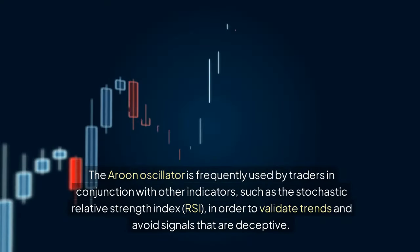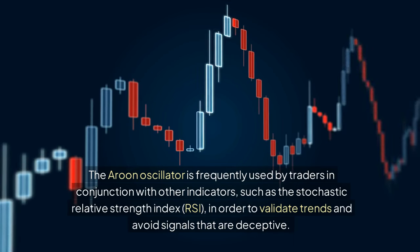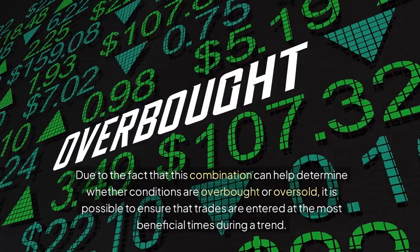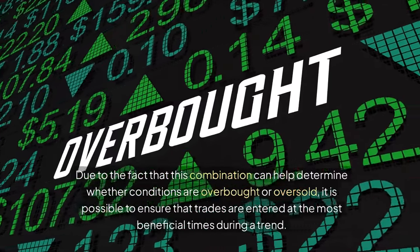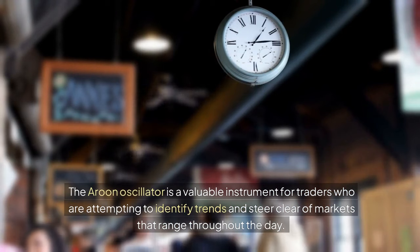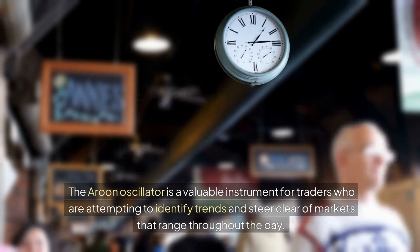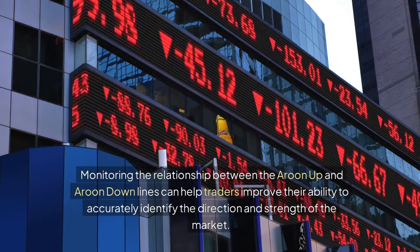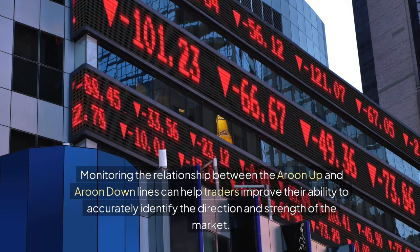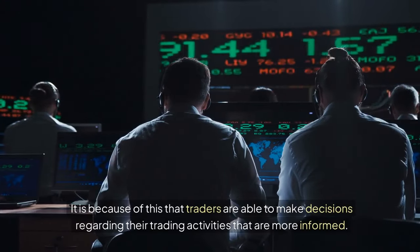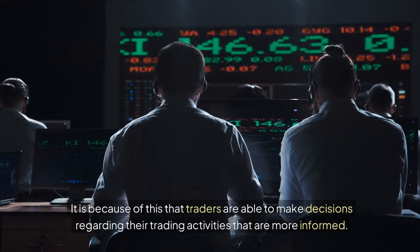The Aroon oscillator is frequently used by traders in conjunction with other indicators, such as the Stochastic Relative Strength Index (RSI), in order to validate trends and avoid signals that are deceptive. This combination can help determine whether conditions are overbought or oversold, ensuring that trades are entered at the most beneficial times during a trend. Monitoring the relationship between the Aroon up and Aroon down lines can help traders improve their ability to accurately identify the direction and strength of the market, enabling more informed trading decisions.